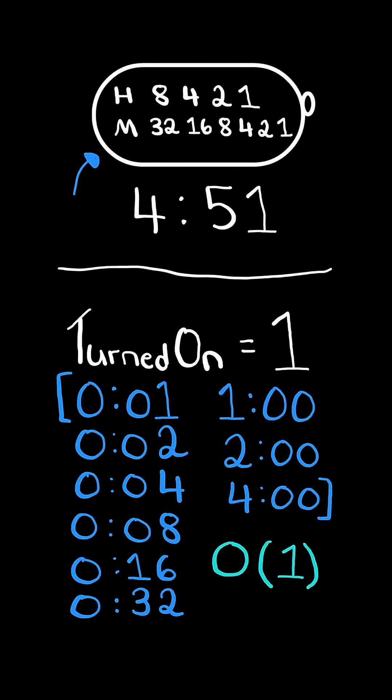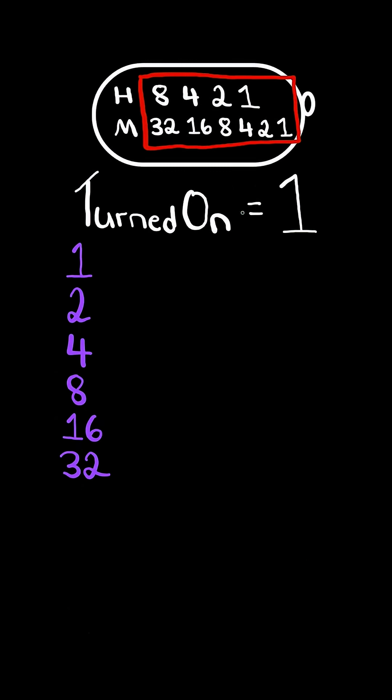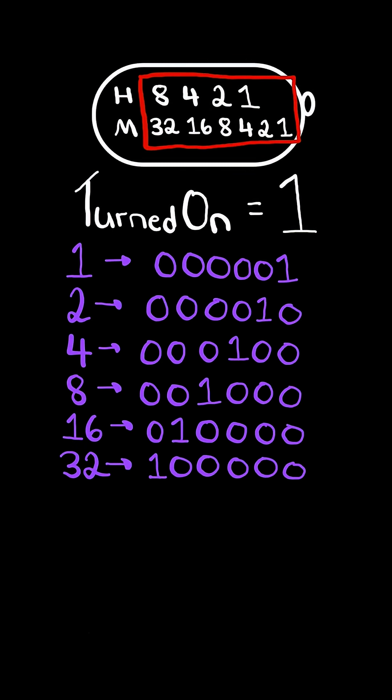We will solve this in constant time. The key is noticing that the LEDs for hours and minutes are powers of 2. Consider their binary representation—the binary representation of a power of 2 only has one bit set.